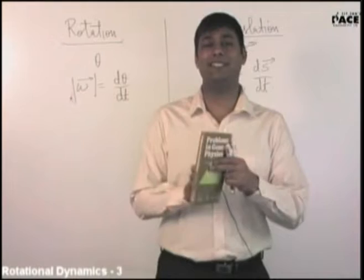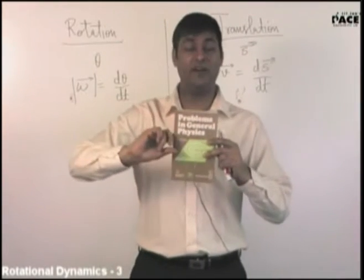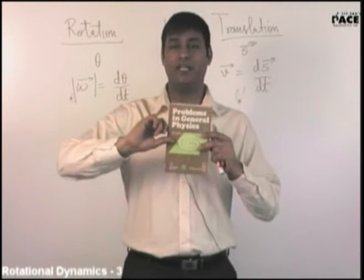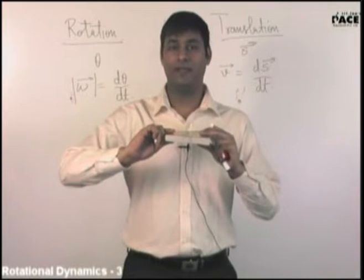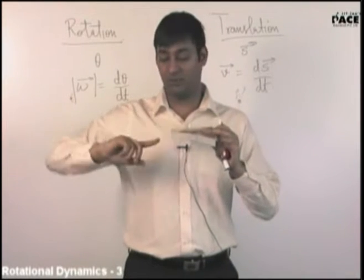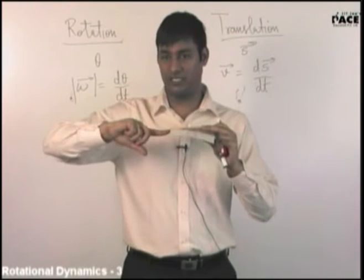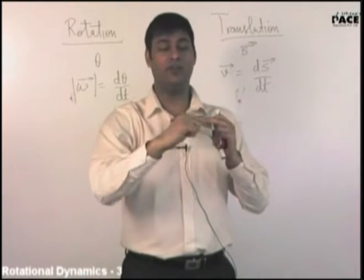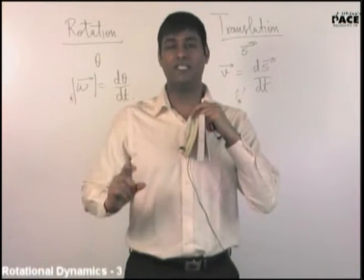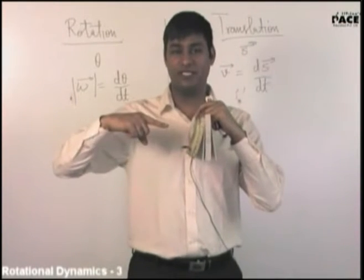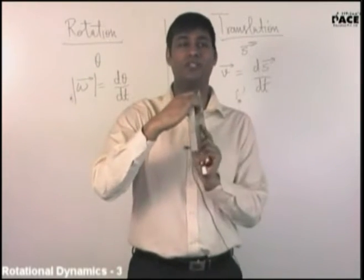Suppose this is the HC Varma book and the initial position is this. I rotate the book 90 degrees clockwise about this axis — that is 90 degrees clockwise. Now I rotate it 90 degrees clockwise about this other axis. Here we have reached a final position. So first rotation was 90 degrees clockwise about one axis, second was 90 degrees clockwise about another axis, and the final position is this.